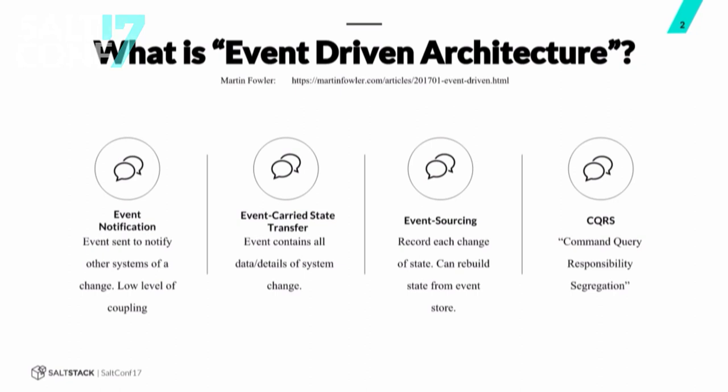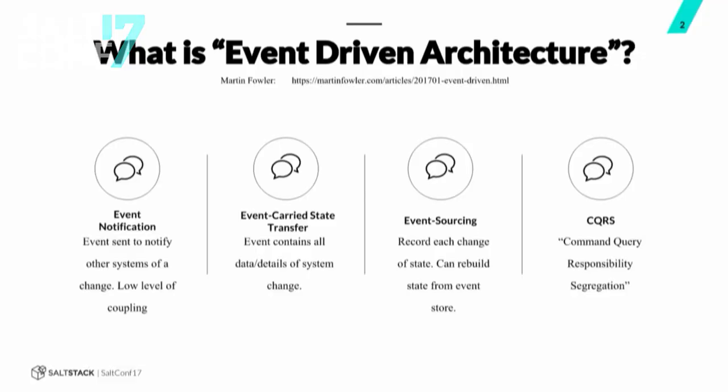Event notification is a very simple, very loosely coupled architecture where the source of your event doesn't really care what happens once that event is sent — it sends an event, washes its hands, and it's done. Event-carried state transfer is where information about the event comes along with the event, and again the resource doesn't really care much, but the recipient of that event uses that data — sticks it into a database, changes configs, whatever — based off the data in that event.